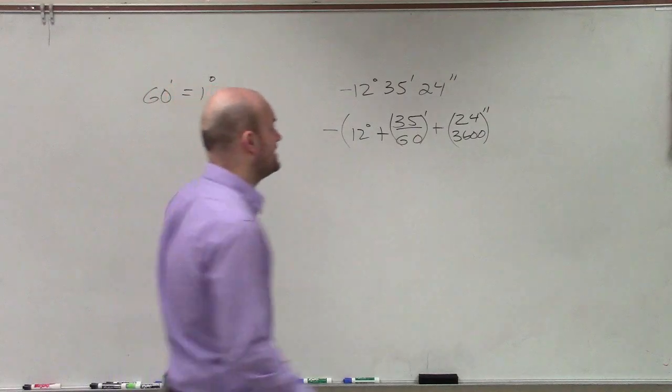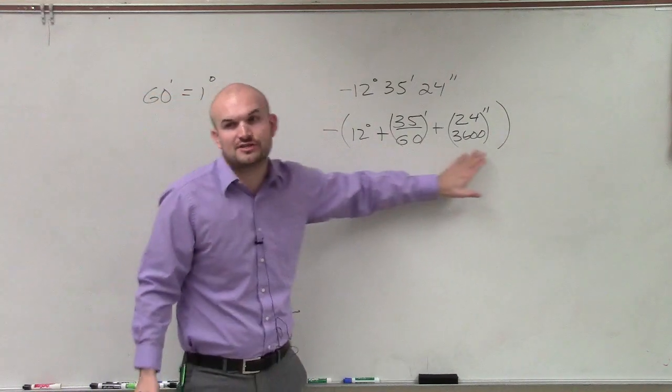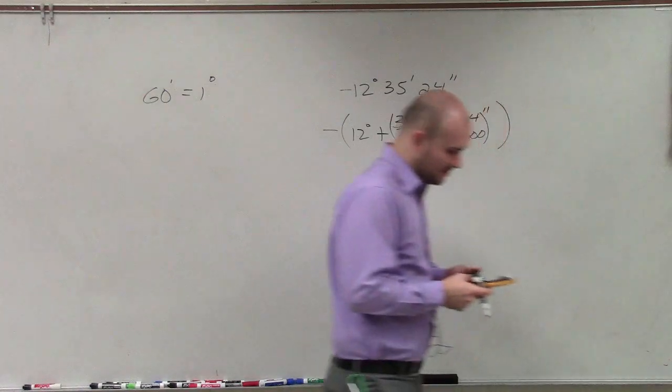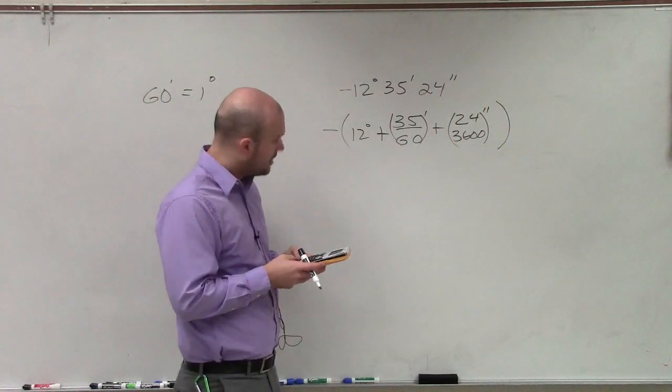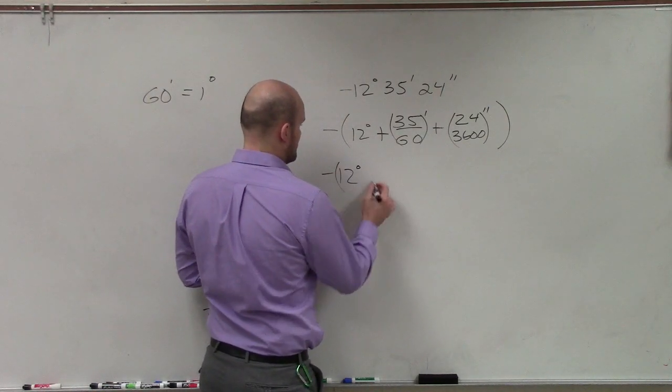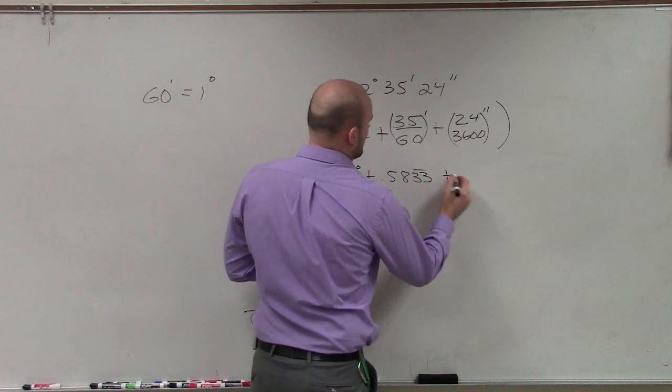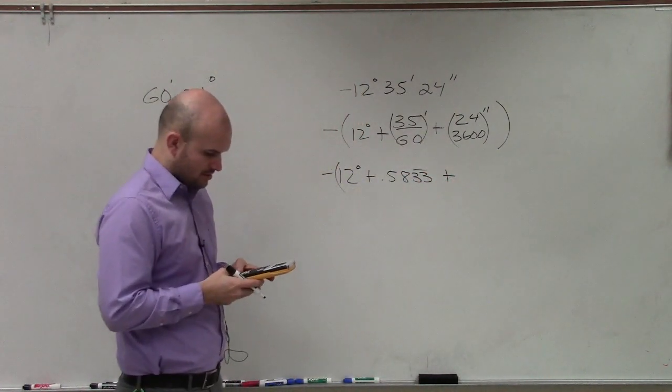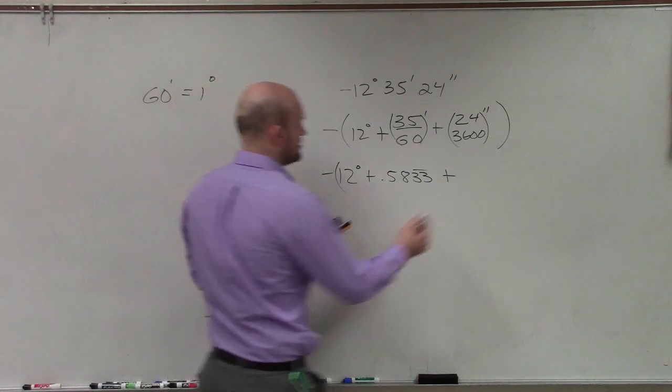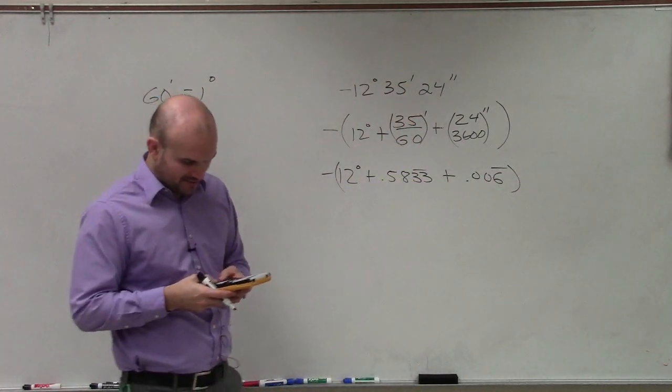And then you just simply add these up. Now remember, this is confusing because you have the negative. But this negative is just going to be on the outside. So you're going to add all these up. So then what I do is just take my calculator and say 35 divided by 60. So it's going to be negative 12 degrees plus 0.5833 repeating, plus 24 divided by 3600, which is 0.006 repeating. So then I can just add those up together.